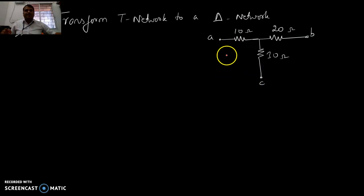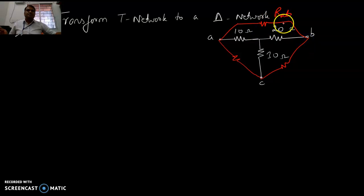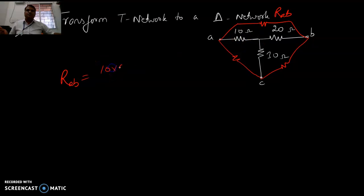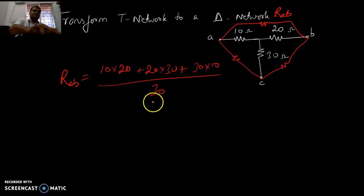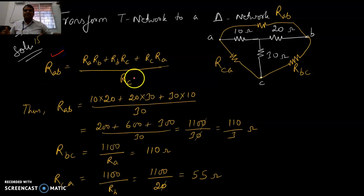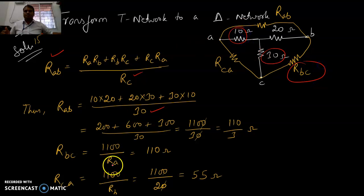Now with a T network, find the delta network. For RAB, multiply all resistances with each other: 10 times 20 plus 20 times 30 plus 30 times 10, then divide by the opposite resistance, which is RC = 30 ohms. Similarly, RBC has RA = 10 ohms in the denominator, giving 110 ohms, and RCA is 55 ohms.